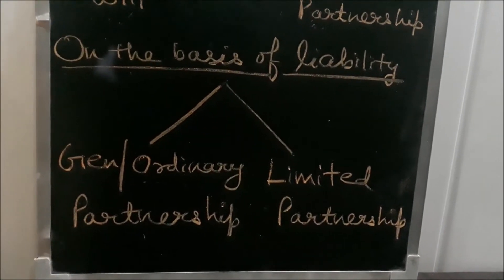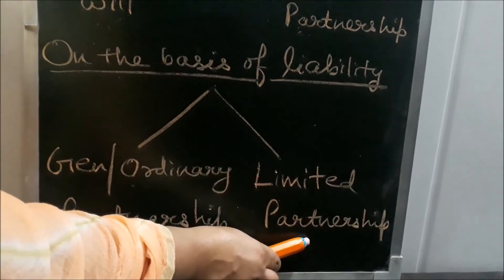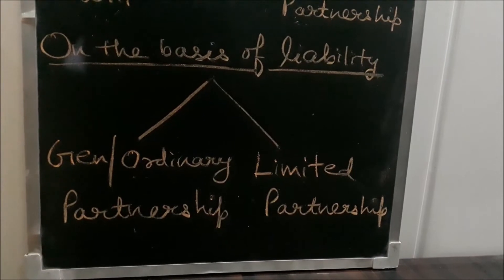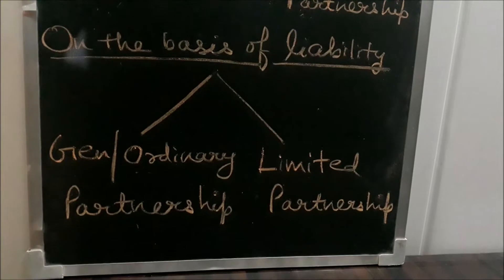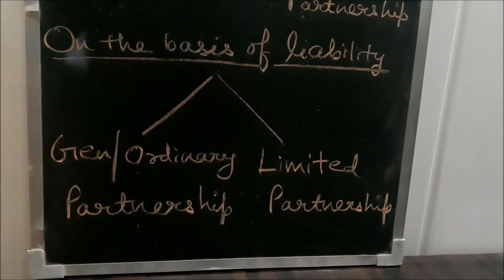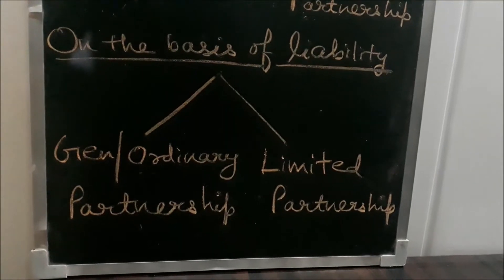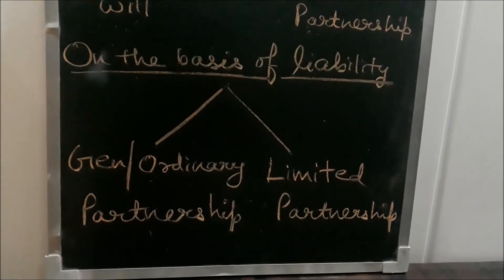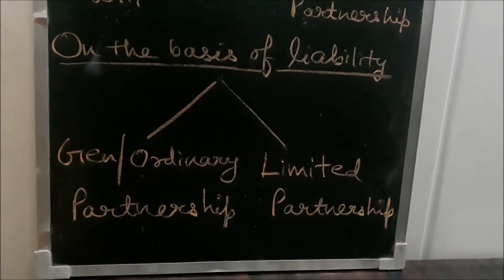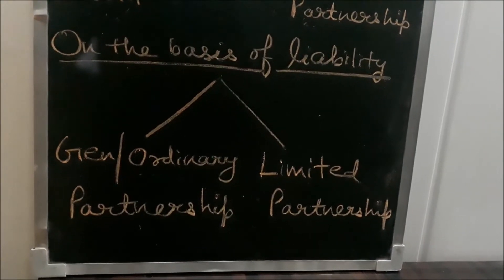The fifth point about general partnership is that registration is optional — it is not mandatory. Now for limited partnership: first, only one partner has unlimited liability, and all the remaining partners have limited liability — they are called limited partners. Second, limited partners are not allowed to participate in the management of the firm. Third, death, lunacy, insolvency, or bankruptcy of limited partners will not affect the life of the firm. Fourth, any contract signed by limited partners will not bind other partners or the firm. Fifth, registration is mandatory.